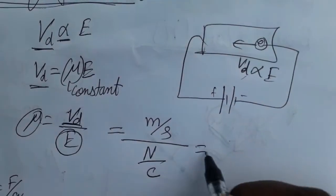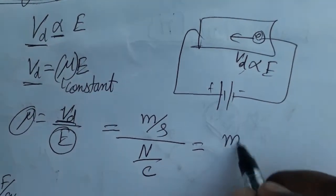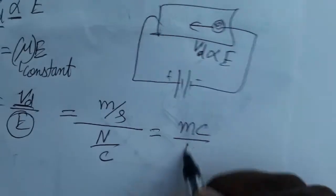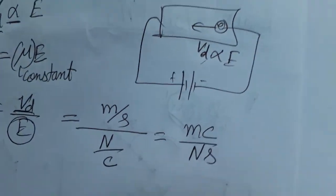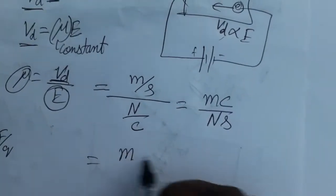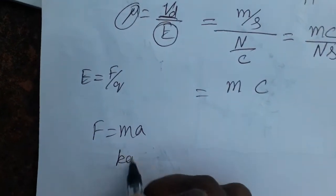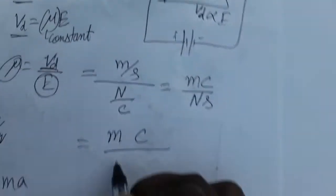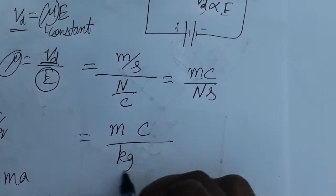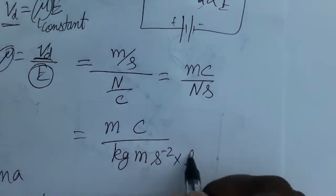From the formula, Coulombs comes to the numerator, and we get meter·Coulombs per Newton·second. Now, what is Newton? Newton is force, and force equals mass times acceleration, so Newton equals kg·m/s², which means kg·meter·second⁻².